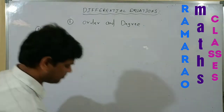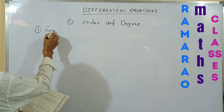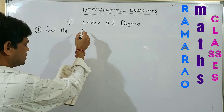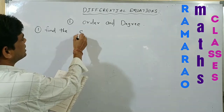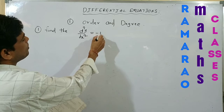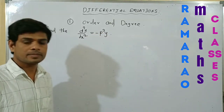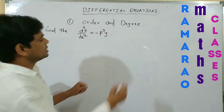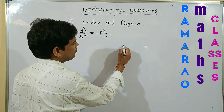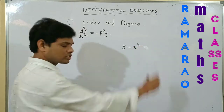Find the order and degree of the differential equation: d²y/dx² = -p²y. Here, as an assumption, let y = x².